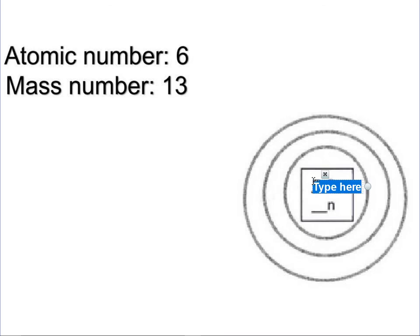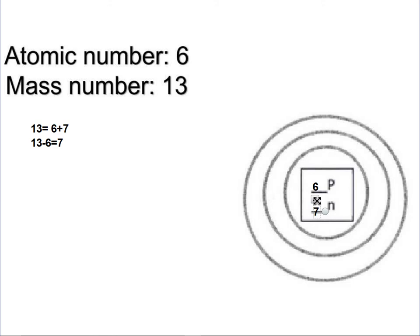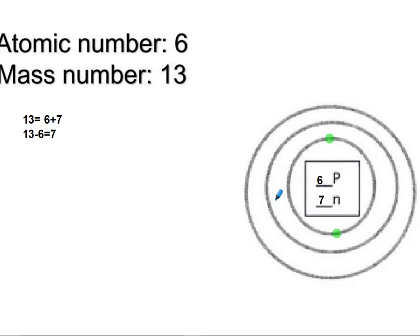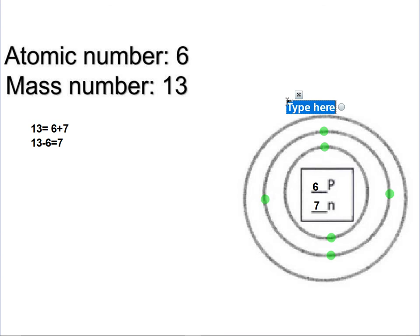Our atomic number is 6, so we're going to have 6 protons. For our mass number: 13 equals 6 plus the neutron number we don't know, so 13 minus 6 equals 7. Check: 6 plus 7 gives you 13 — you have 7 neutrons. Add your electrons: 6 electrons, 2 in the first energy level and 4 on the outside. Atomic number 6 is carbon, so this is carbon-13.